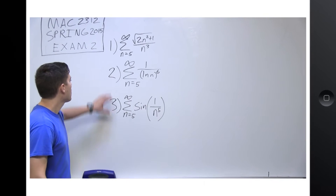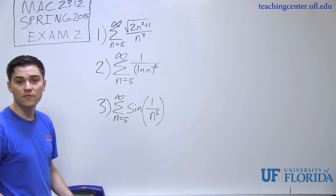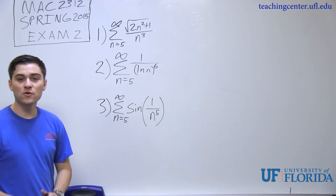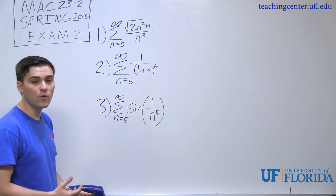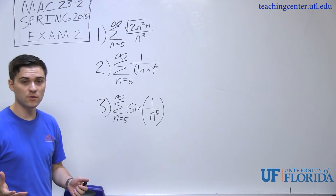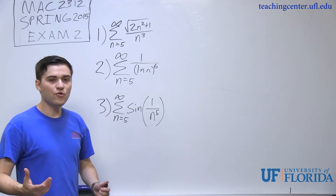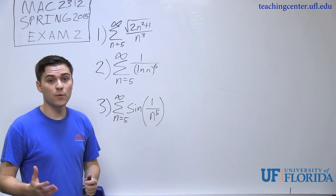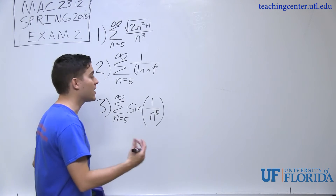For this first example we're going to look at three different series and try to prove convergence or divergence for all three. For the first one — square root of (2n² + 1) over n³ — I'm going to try a comparison test. When we have polynomials, especially ones under a square root, the comparison test is usually a good place to start, so I'm going to write out my inequality.